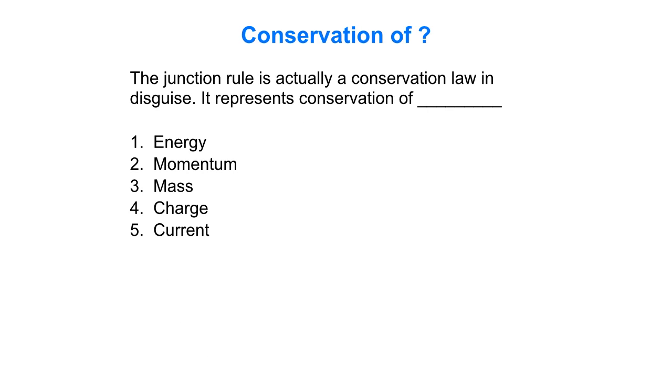So what do you think? The junction rule is actually a conservation law in disguise. In effect, it represents conservation of charge. So, a certain amount of charge coming into a junction, you've got to account for all that charge. You can't magically have charge disappear at the junction or magically add charge from nowhere. All the charge coming in has to equal the amount flowing out.